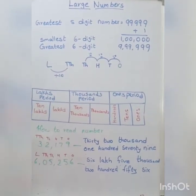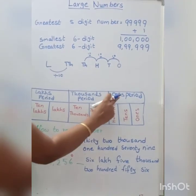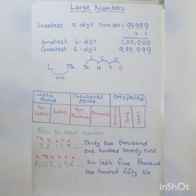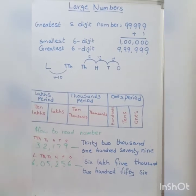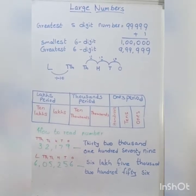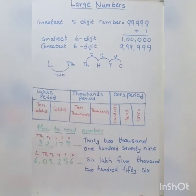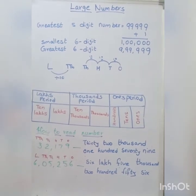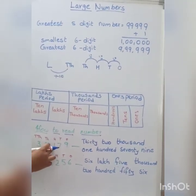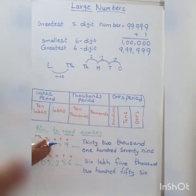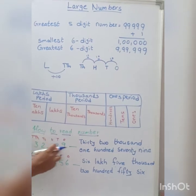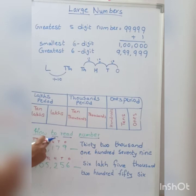Here a place value chart is given with periods and places. The 1s period has 1s, 10s, 100s. The 1,000s period has 1,000s and 10,000s. The lakhs period has lakhs and 10 lakhs. With this chart we can read number names easily. We keep commas according to periods. For example, the given number 3, 2, 1, 7, 9 — we assign places: 1s, 10s, 100s complete the 1s period, then 1,000s and 10,000s. So the number is written as 32,179.